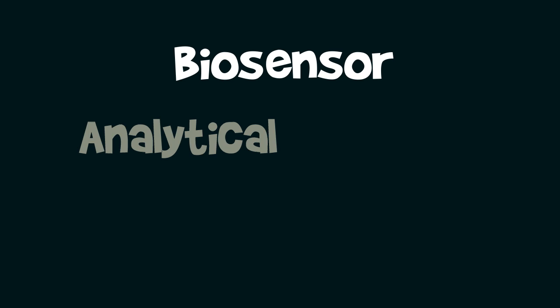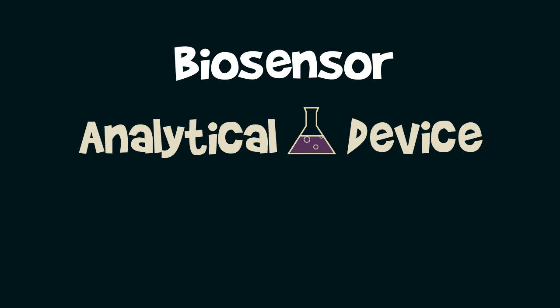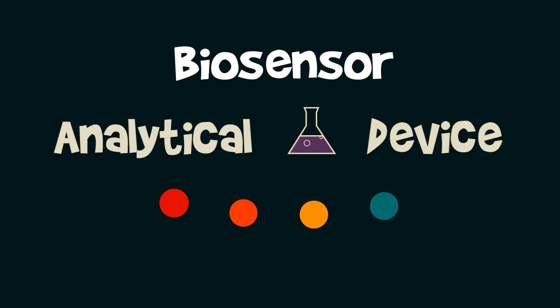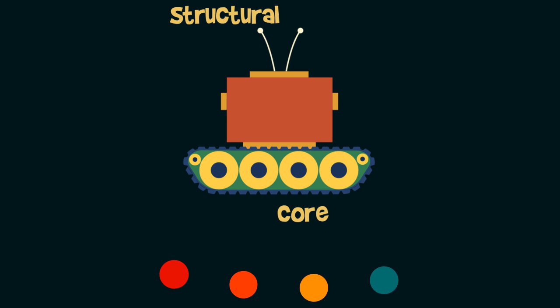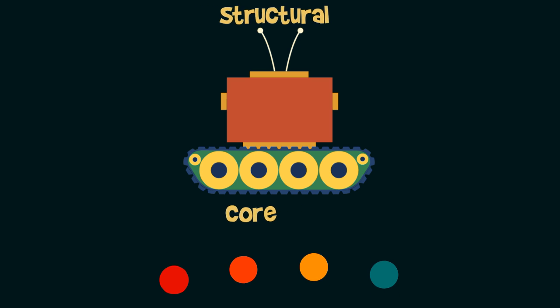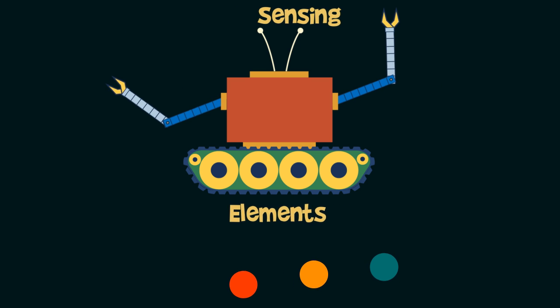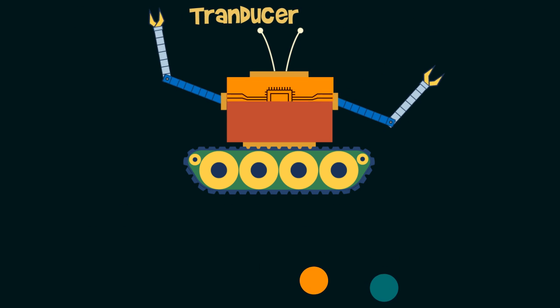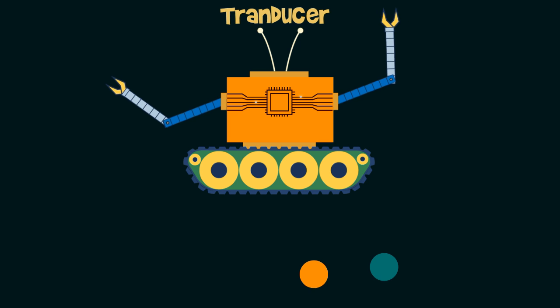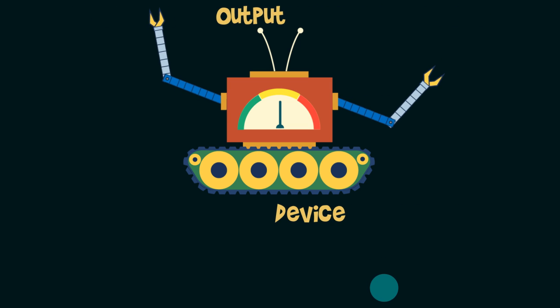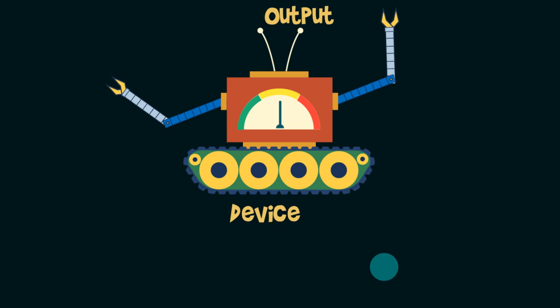What is a biosensor? A biosensor is an analytical device which consists of four parts. The first of these is a structural core to hold all the components together. Then, there are the sensing elements to produce an input signal on detecting the target molecule. Followed by this is the transducer to convert the signal into a readable form and an output device to present the result to the user.